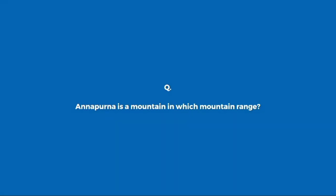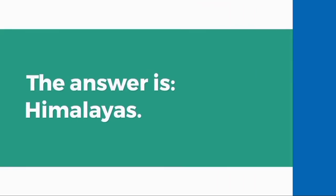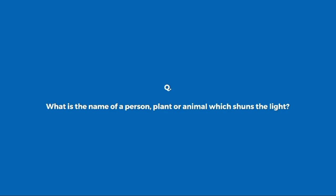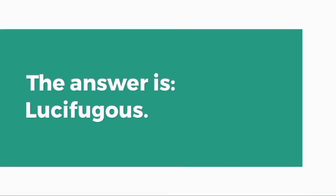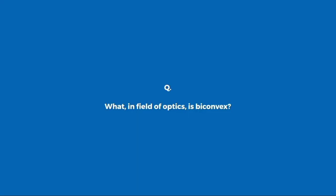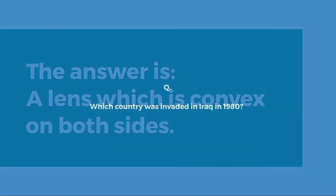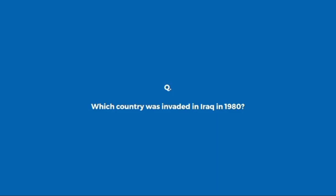Annapurna is a mountain in which mountain range? Himalayas. What is the name of a person, plant or animal which produces light? Luminescent. What, in the field of optics, is bi-convex? A lens which is convex on both sides.